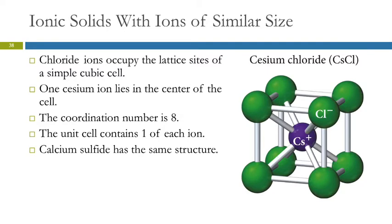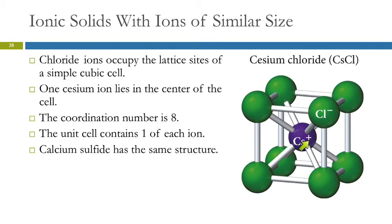First, we'll look at ionic solids in which the ions are of similar size. An example is cesium chloride — the cesium cation and chloride anions are approximately the same size. These take on a simple cubic cell structure where the cesium ion lies in the center of the cell and the chloride ions form the simple cubic cell. One kind of ion determines the cell, and the other fits in between. The coordination number here is 8, meaning the cesium ion is in direct contact with 8 chloride ions, and the unit cell contains one of each ion.